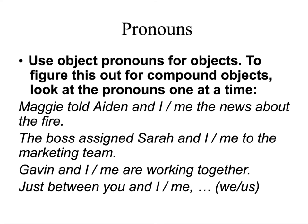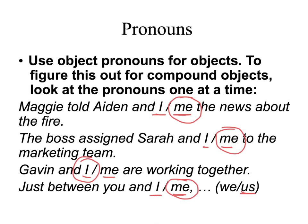Let's take a look at a couple of examples. If you have 'Maggie told Aiden and ___' — is it I or is it me? Me. She told me the news about the fire. 'The boss assigned Sarah and ___' — I or me? The boss assigned me to the marketing team. 'Gavin and I or me are working' — that's a subject, so you want the subject pronoun: I am working. And 'just between you and I or me' — this is tricky because you can't just say 'just between me,' but you can say 'just between us,' and since us is the object pronoun, we need the object pronoun here.